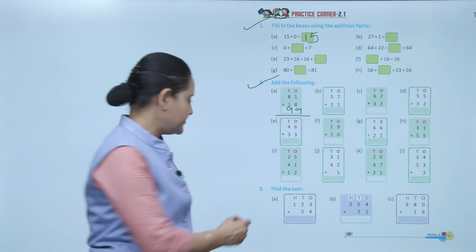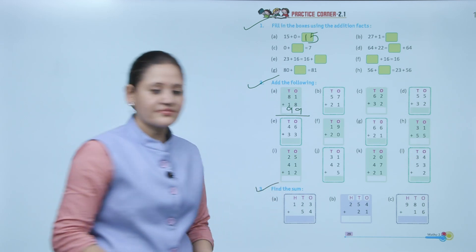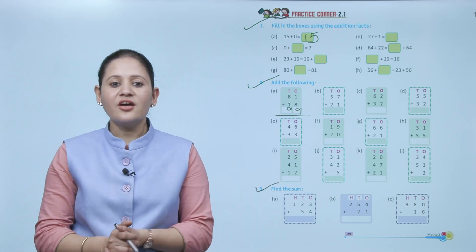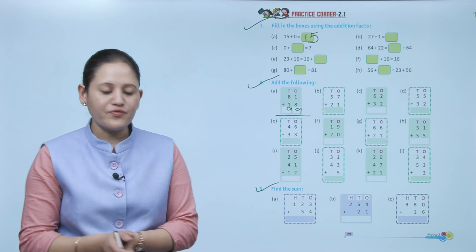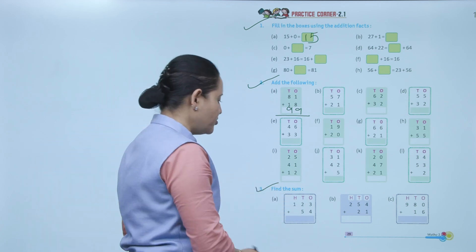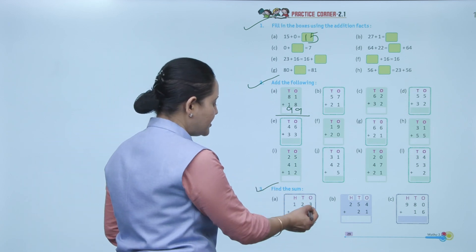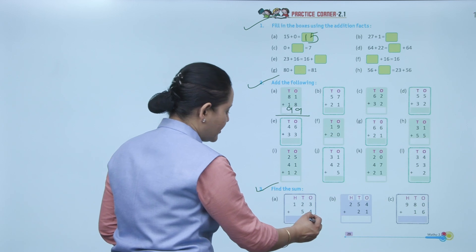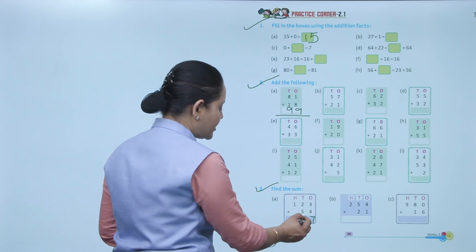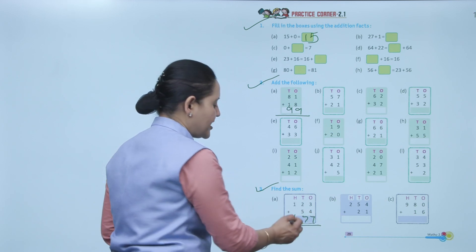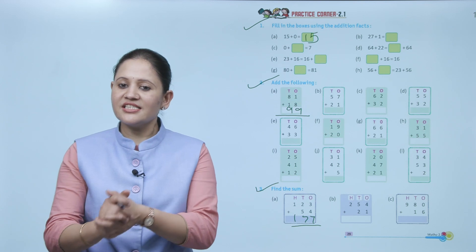Find the sum: We have to add 123 plus 54 — a three-digit number and a two-digit number. Start from ones — 4 plus 3 is 7; then 5 plus 2 is 7; then 1. The sum is 177.